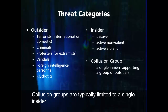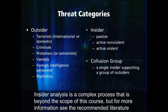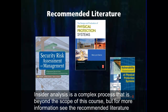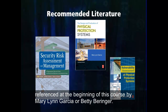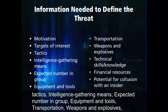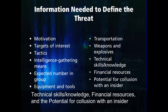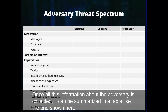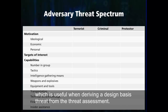Collusion groups are typically limited to a single insider. Insider analysis is a complex process that is beyond the scope of this course, but for more information, see the recommended literature referenced at the beginning of this course by Mary Lynn Garcia or Betty Beringer. Other information needed to define a threat includes the motivations, targets of interest, tactics, intelligence gathering means, expected number and group, equipment and tools, transportation, weapons and explosives, technical skills and knowledge, financial resources, and the potential for collusion with an insider. Once all this information about the adversary is collected, it can be summarized in a table like the one shown here, which is useful when deriving a design basis threat from the threat assessment.